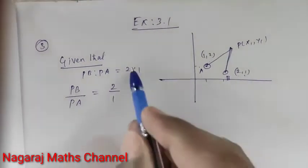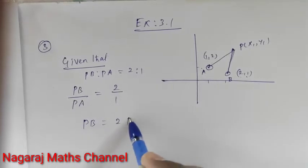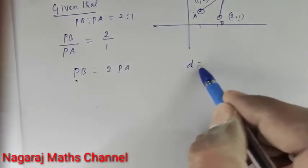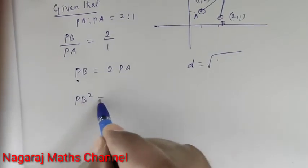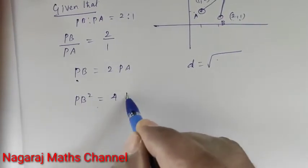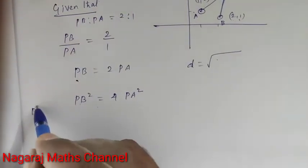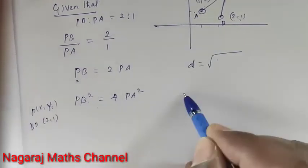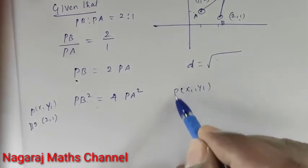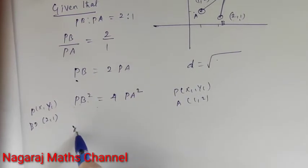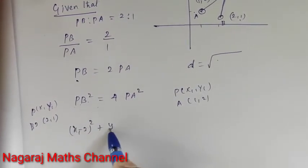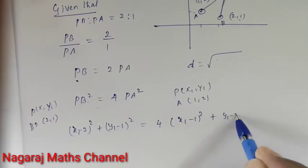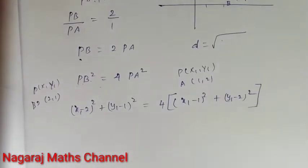Since PB:PA = 2:1, cross-multiplying gives PB = 2·PA. Squaring both sides: (x1 minus 2) squared plus (y1 minus 1) squared equals 4 times [(x1 minus 1) squared plus (y1 minus 2) squared].